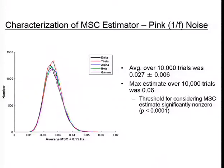These are results from the pink noise test, now over 10,000 trials instead of 1,000. We saw that in the individual frequency bands, averages over these 10,000 trials were uniform across all frequency bands at a value of 0.027 with a standard deviation of 0.006. The maximum estimate observed over these 10,000 trials was 0.06. This gave us a threshold for considering a coherence estimate significantly non-zero when looking at the actual brain data.